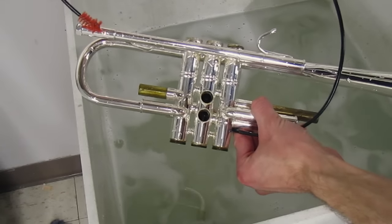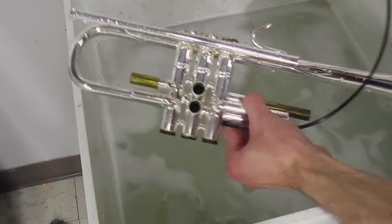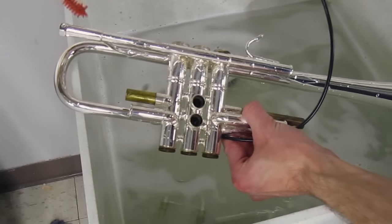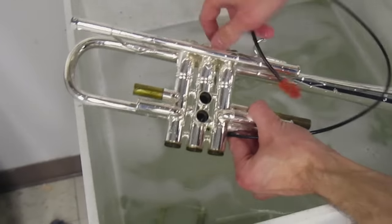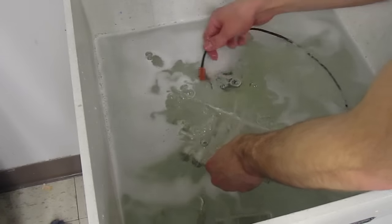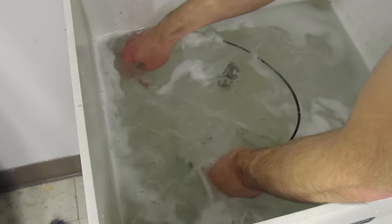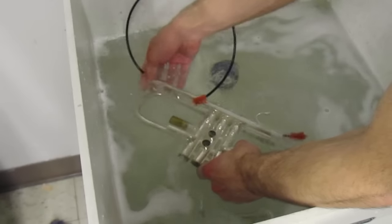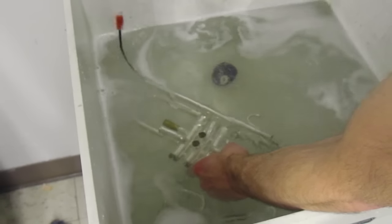When the trumpet is done soaking, leave the trumpet under the water and feed the snake through the lead pipe like so, pulling the snake through once it gets to the other end. Some people like to do this step out of the water, but I think it's best to do it in the water because that way all the gunk will really get out of the trumpet. But you can do either or.